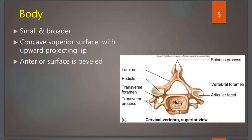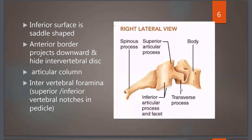The body of a typical cervical vertebra is small and broader; it is concave on the superior surface with upward projecting lips, and its anterior surface is beveled. The inferior surface is saddle-shaped, and the anterior border projects downwards hiding the intervertebral discs. Between two vertebrae there is an opening called the intervertebral foramen, which gives passage to nerves — in cervical vertebrae it passes cervical nerves that take part in the formation of the cervical and brachial plexus.